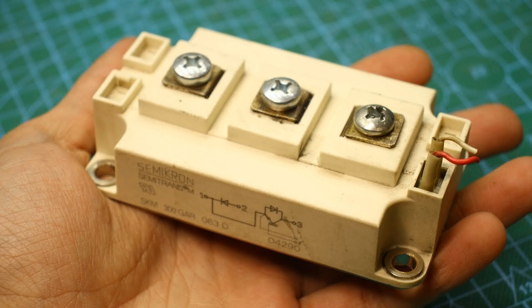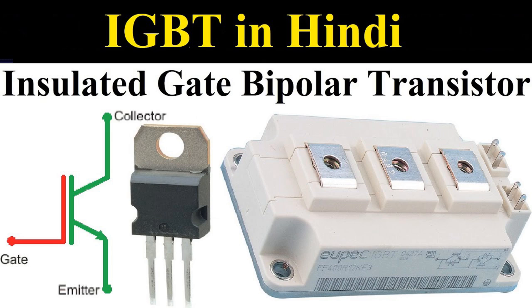Collector — P-plus substrate: This is the bottom layer of the IGBT, heavily doped with positive P-plus carriers. It serves as the collector terminal and is responsible for collecting holes during conduction. The N-drift region is a lightly doped, wide region that separates the collector from the gate and channel, providing the high-voltage blocking capability of the IGBT and determining its voltage rating.